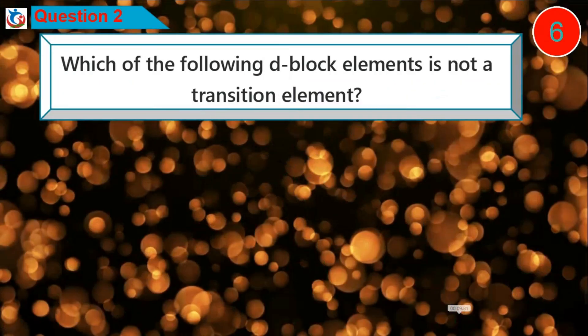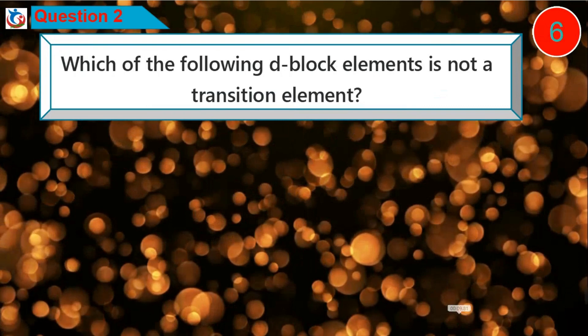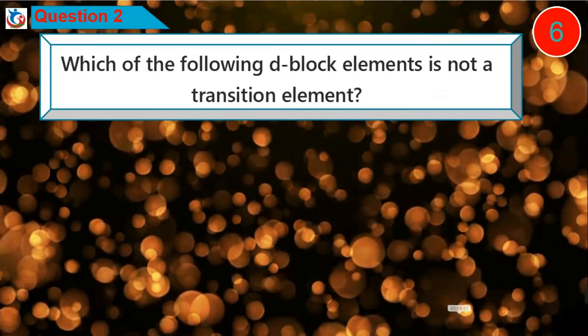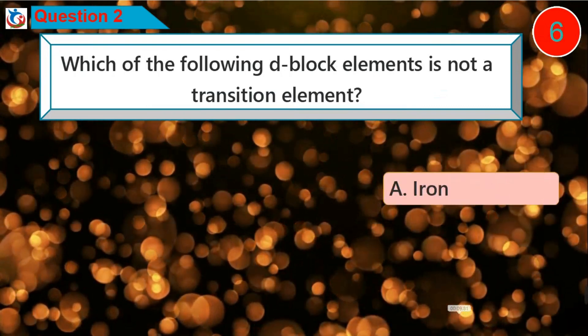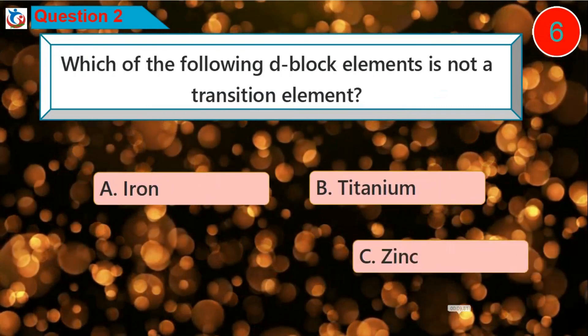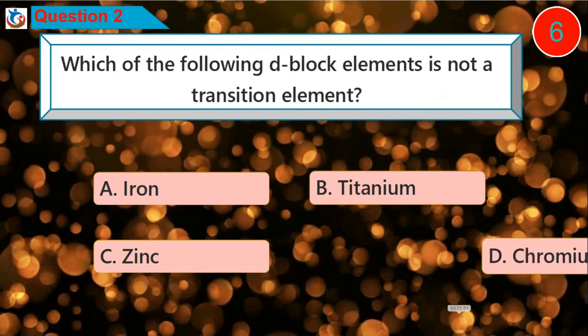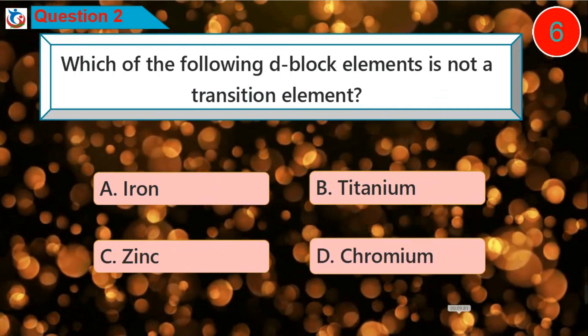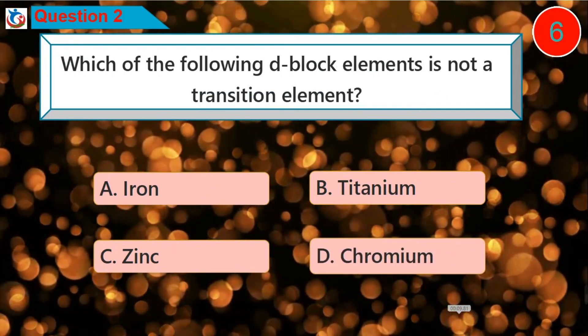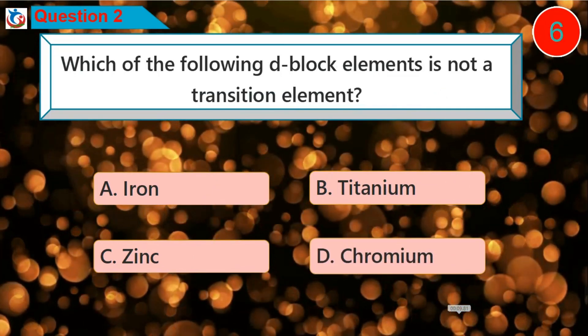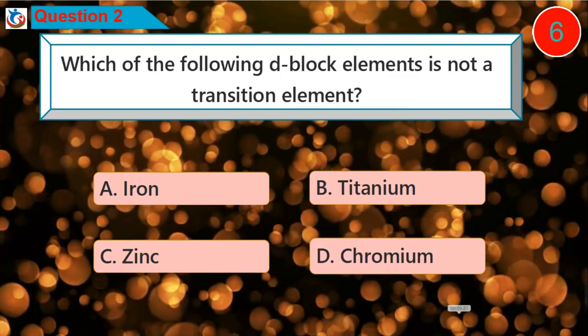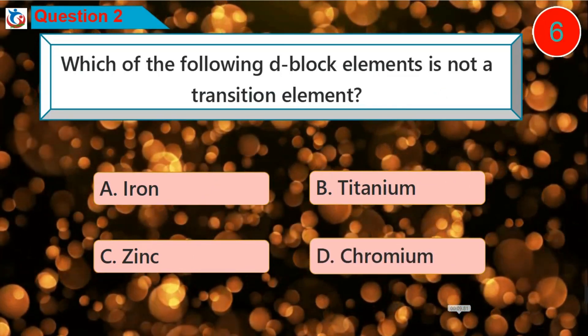Question 2: Which of the following d-block elements is not a transition element? A. Iron, B. Titanium, C. Zinc, D. Chromium.